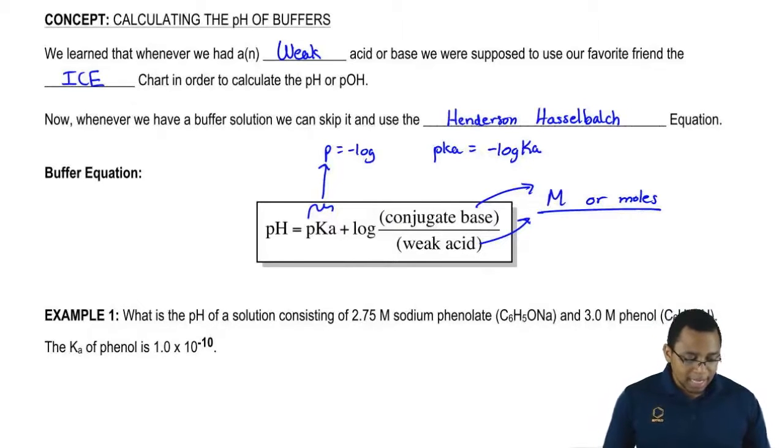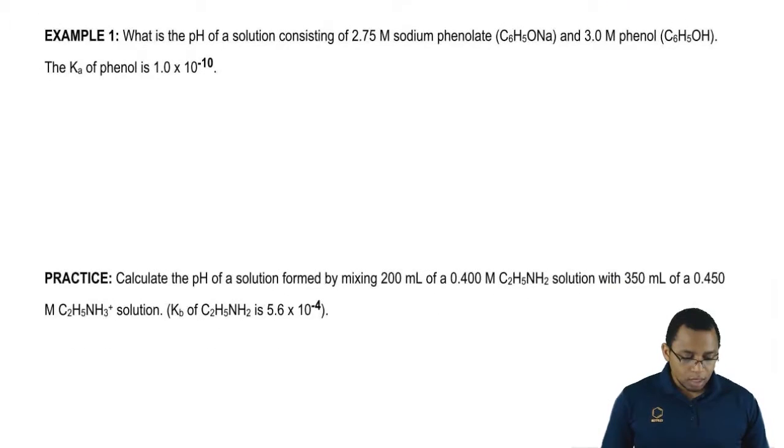Let's look at this first question and see how we use it. What is the pH of a solution consisting of 2.75 molar sodium phenolate and 3.0 molar phenol? The Ka of phenol is 1.0 × 10^-10.